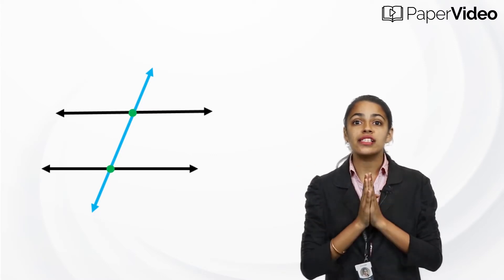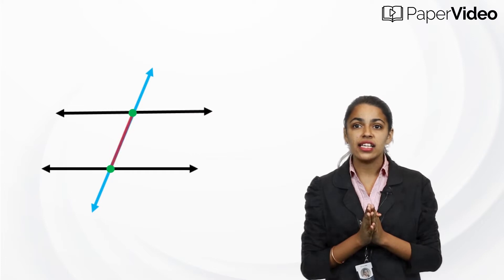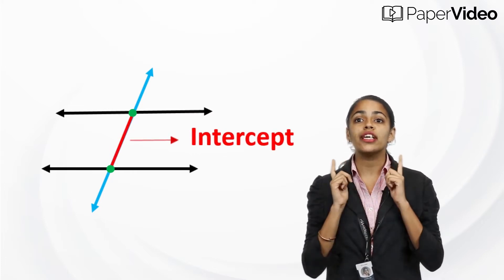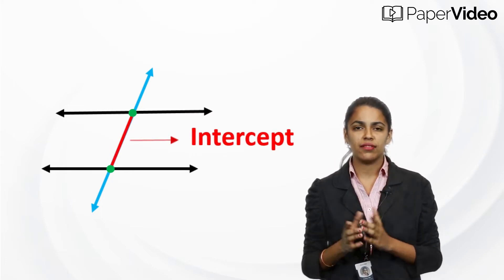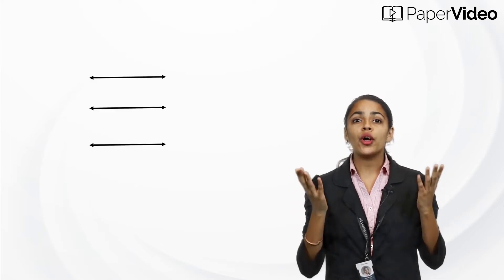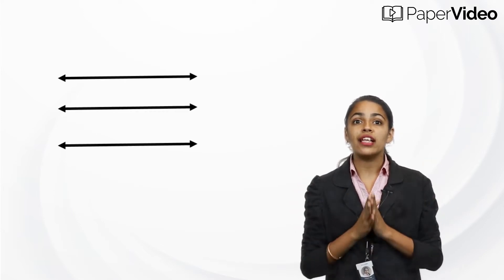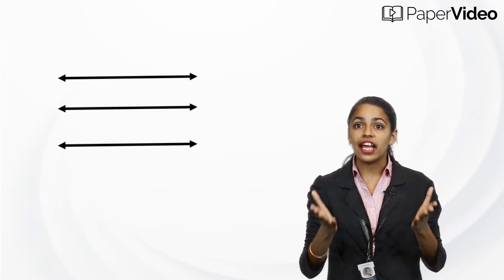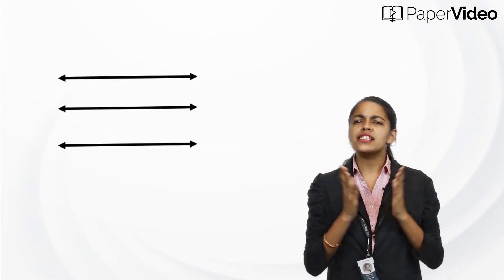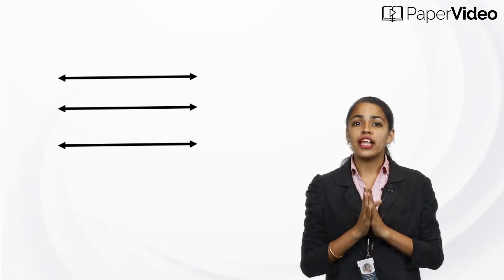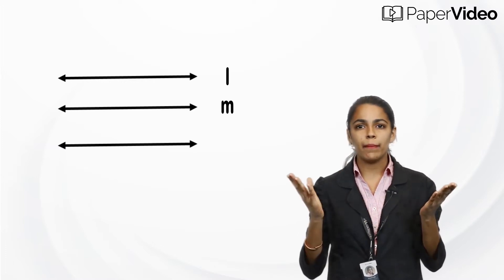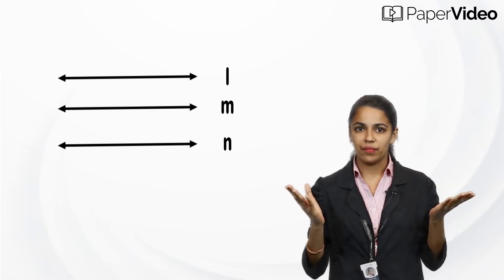In such a case, we call this length the intercept made on the transversal. Now let's understand the property of three parallel lines and their transversals. Let's suppose there are three parallel lines l, m, and n.